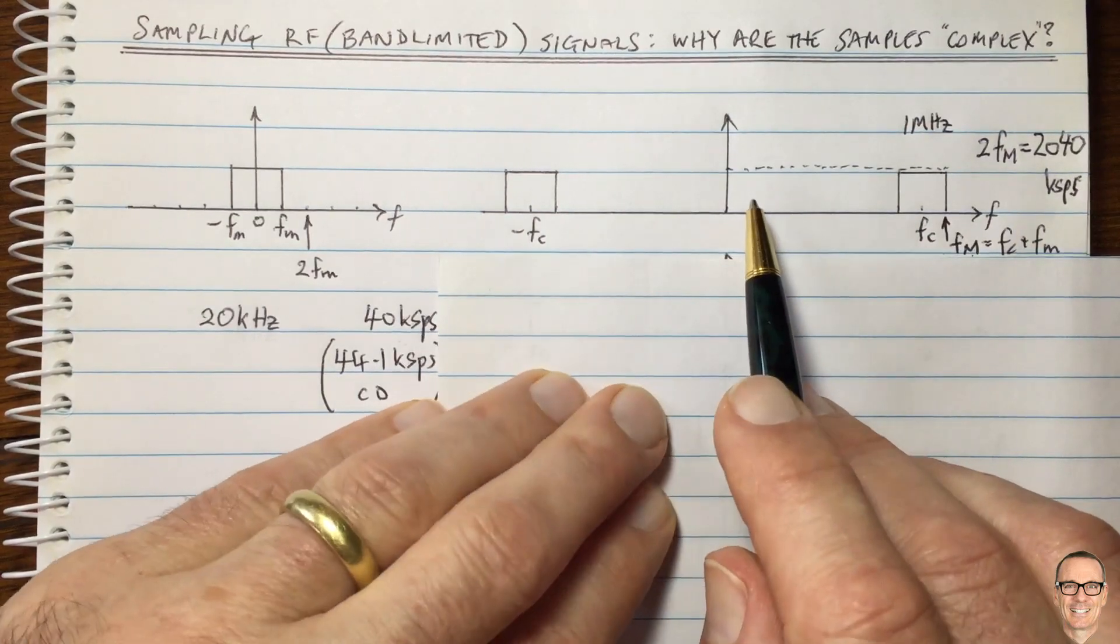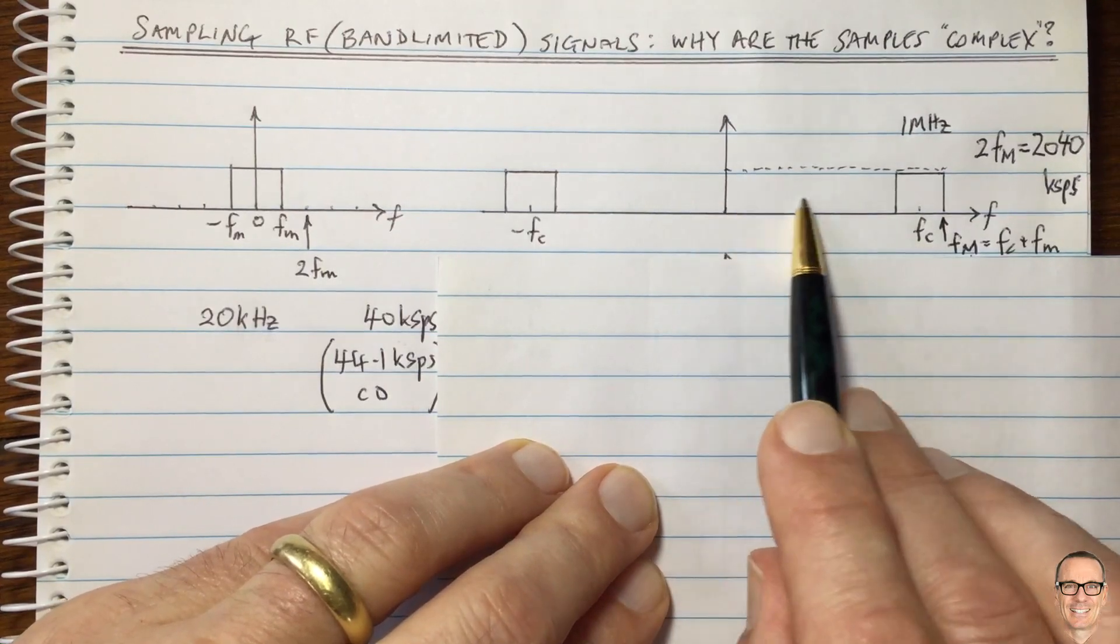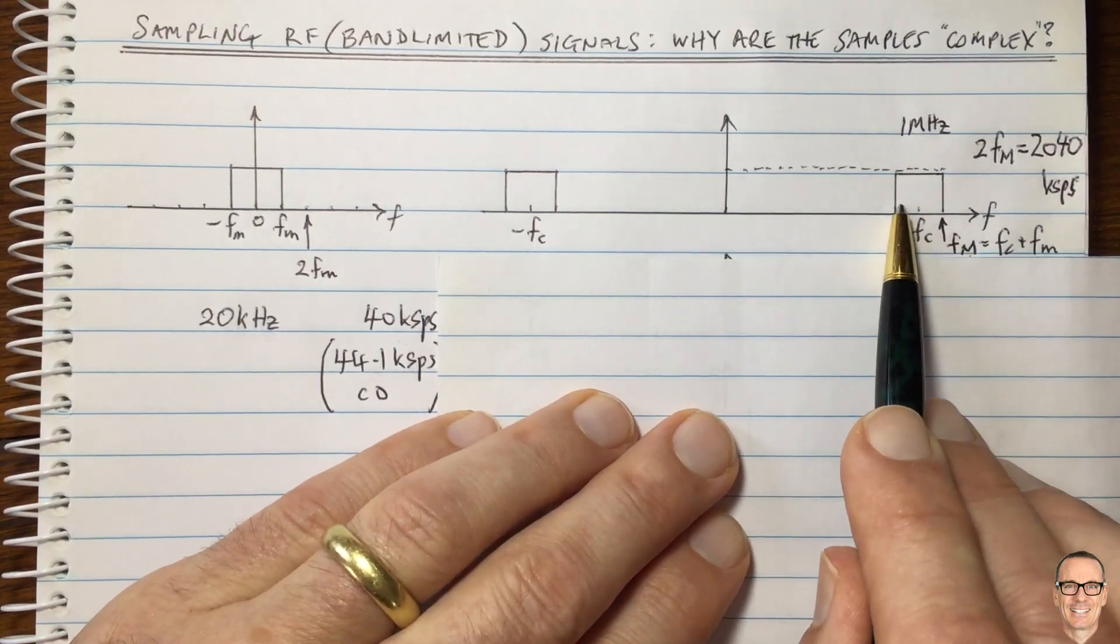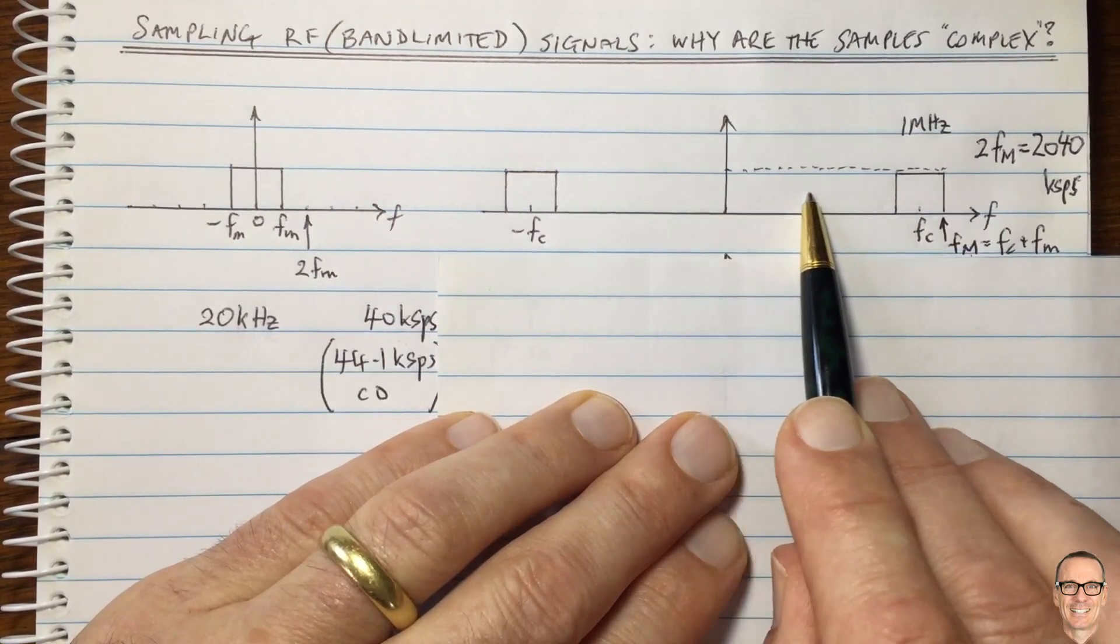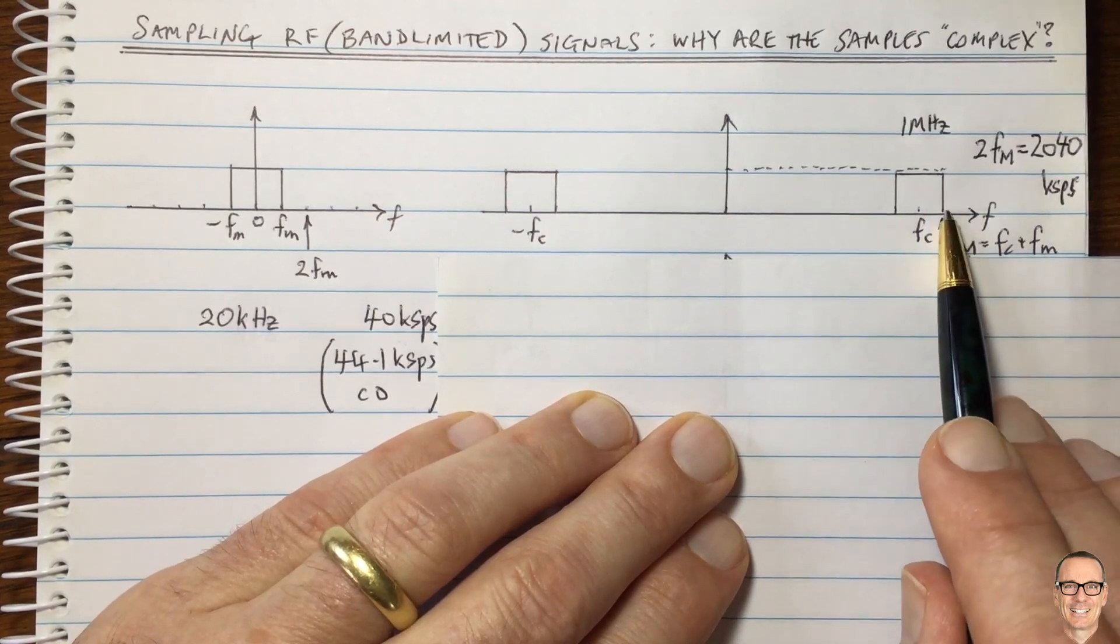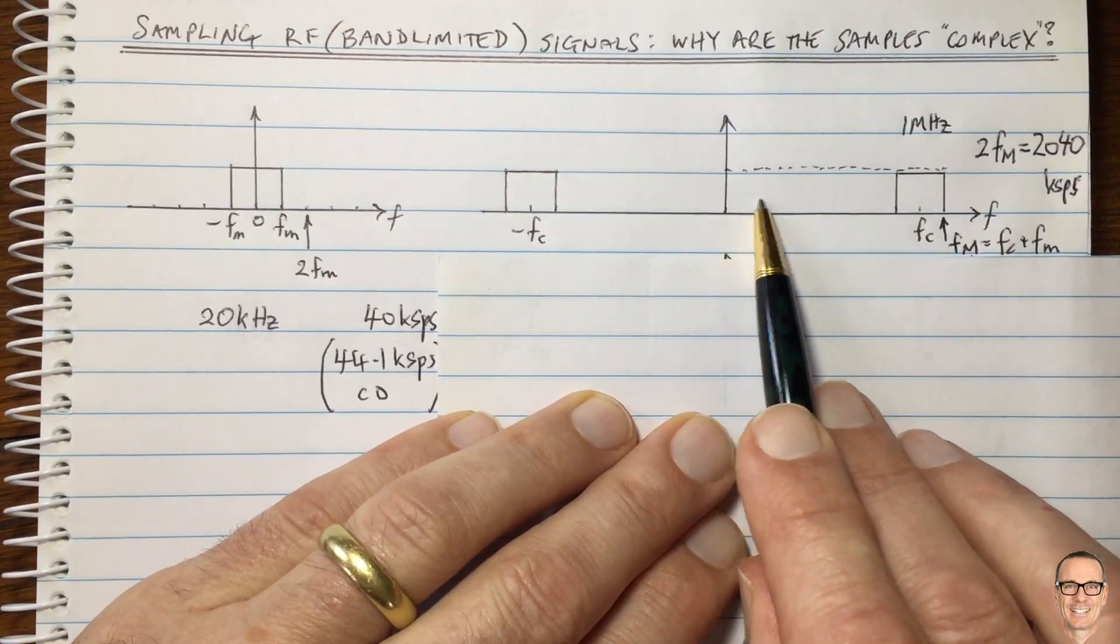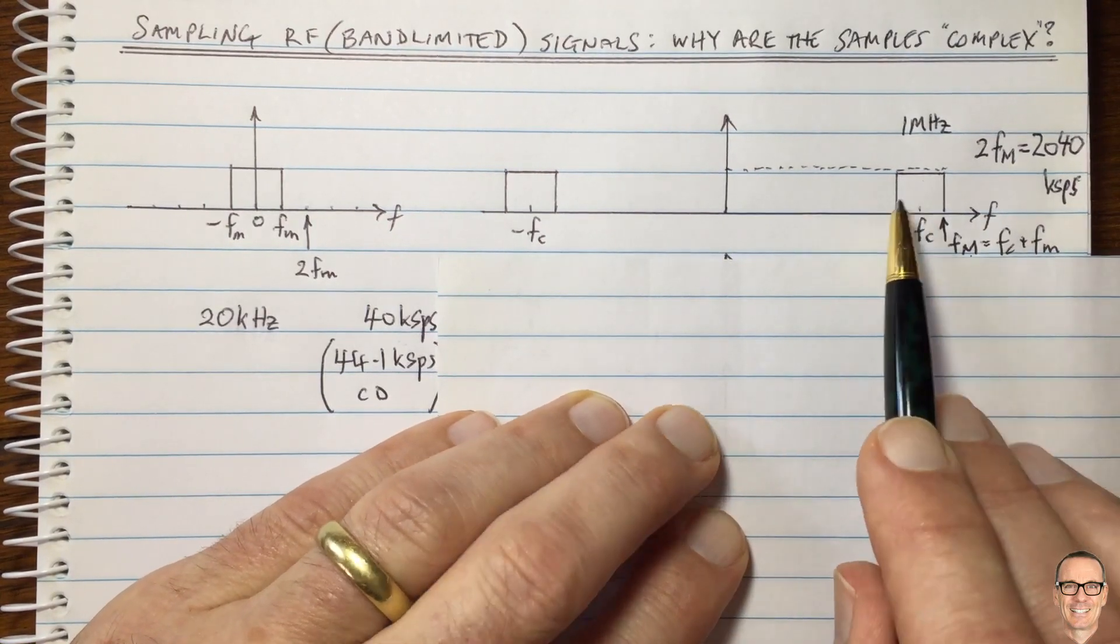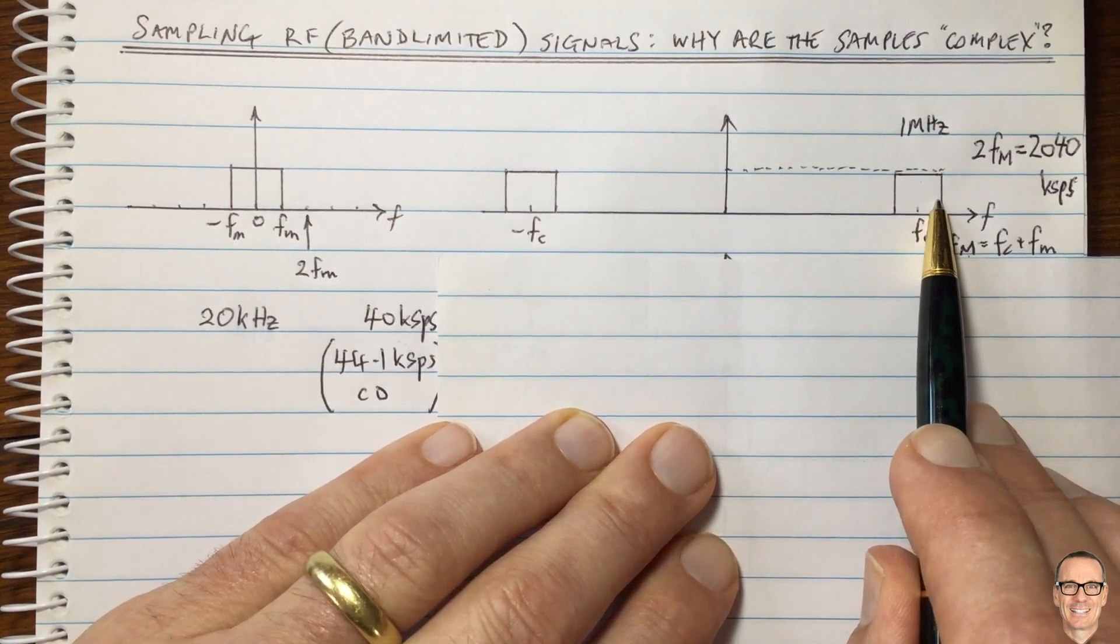So instead, we realize that actually, we are not interested in most of the bandwidth. And that's the key idea. We are only interested in the bandwidth around the carrier. We're not interested in any of this other bandwidth. So sampling at twice this highest frequency component will tell us about all of this frequency, and we're not interested in that because our message is only contained in this frequency band. That's the key idea.